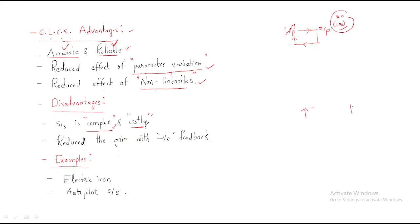Second disadvantage: reduced gain with negative feedback. Feedback is of two types — positive feedback and negative feedback. When using negative feedback, the gain of the system is automatically reduced. This is a disadvantage of the closed-loop control system.